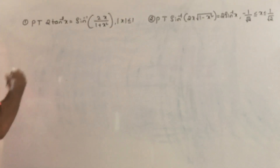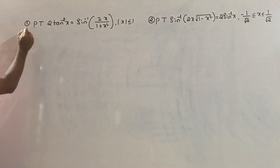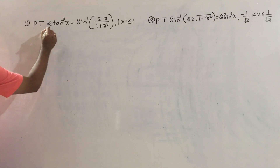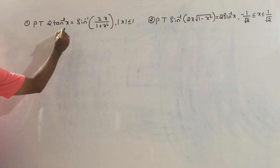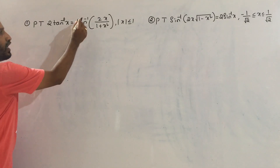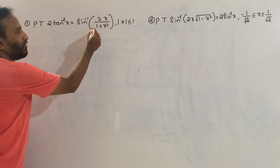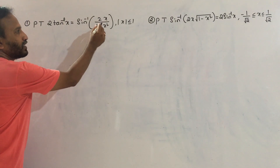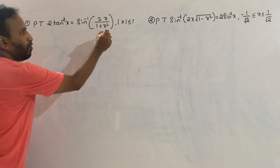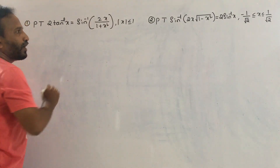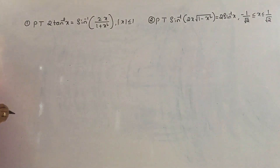First one: prove that 2 tan inverse x equal to sin inverse of 2x divided by 1 plus x squared, where mod x is less than or equal to 1.